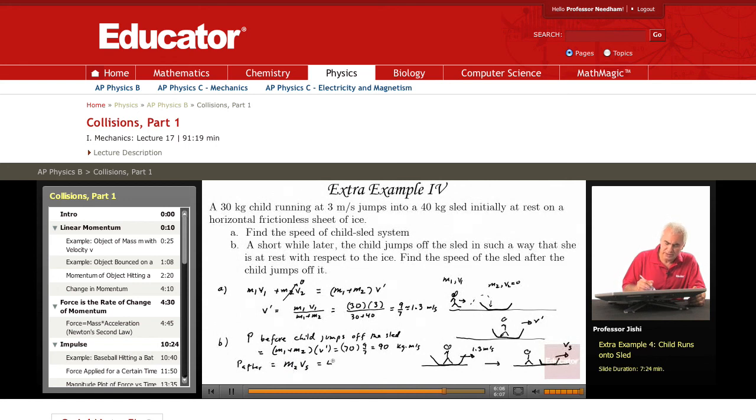This equals 40 kilograms times Vs. The momentum before must equal the momentum after. So, I get 40Vs equals 90 kilograms meter per second, which means that Vs now is 90 over 40. So, that's 9 over 4, which is 2.25 meters per second. After the child jumps, the sled moves with a velocity of 2.25 meters per second.